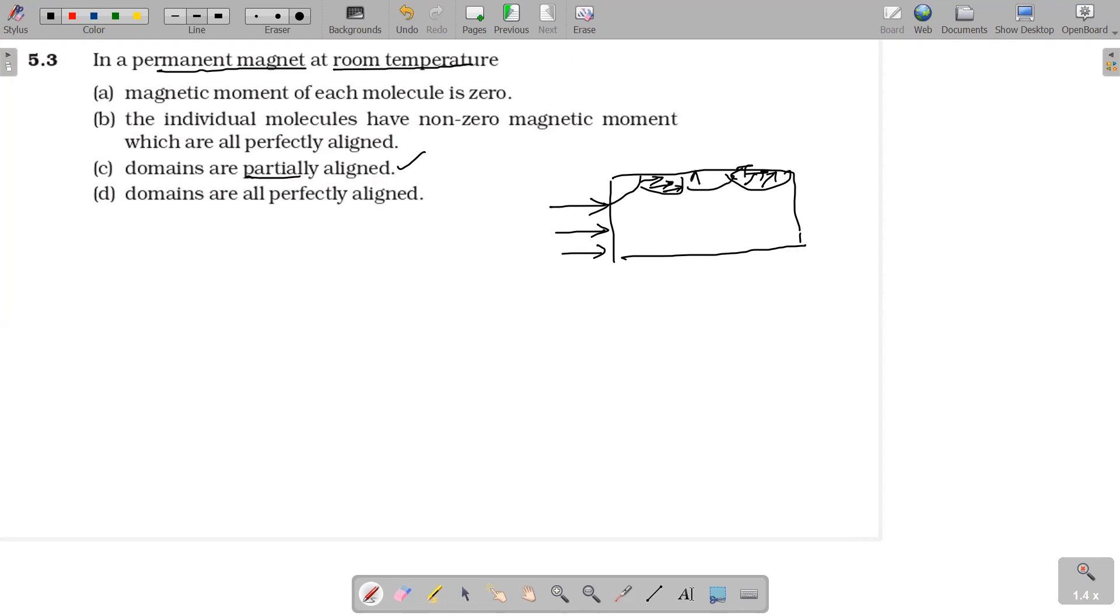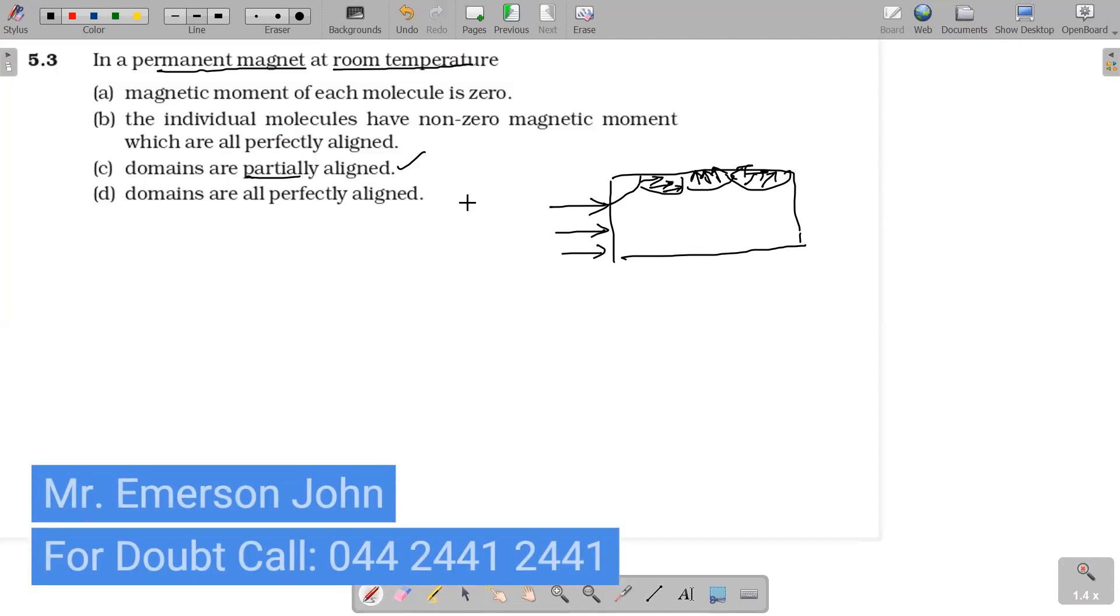When you take domains, all domains will be present. The magnetic moment of each domain will be saturated. But when you compare the magnetic moments of one to another, they will be in different directions. So partially aligned with the Earth's magnetic field can be considered. This is the correct answer for this question.